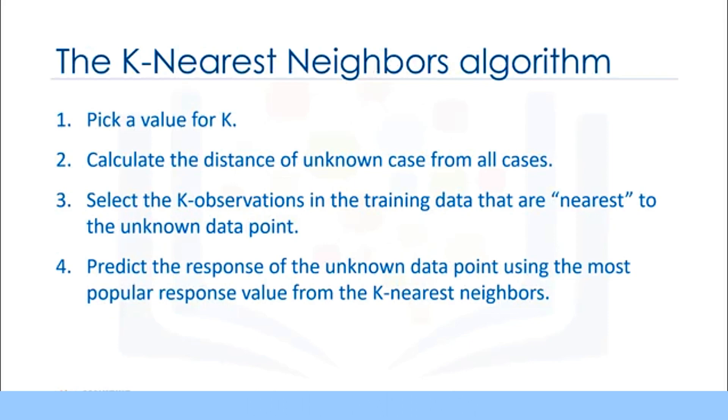There are two parts in this algorithm that might be a bit confusing. First, how to select the correct k. And second, how to compute the similarity between cases, for example, among customers. Let's first start with the second concern. That is, how can we calculate the similarity between two data points?